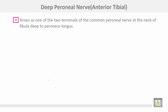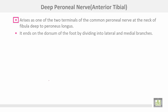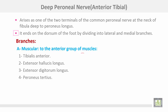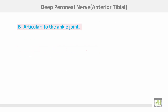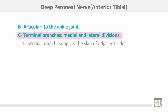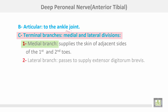The deep peroneal nerve arises as one of the two terminals of the common peroneal nerve at the neck of the fibula, deep to the peroneus longus muscle. It ends on the dorsum of the foot by dividing into lateral and medial branches. Branches include: muscular branches to the anterior group of muscles — tibialis anterior, extensor hallucis longus, extensor digitorum longus, and peroneus tertius — articular branches to the ankle joint, and terminal medial and lateral divisions. The medial branch supplies the skin of the adjacent sides of the first and second toes; the lateral branch passes to supply extensor digitorum brevis.